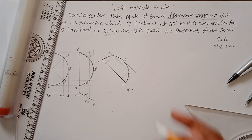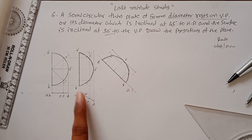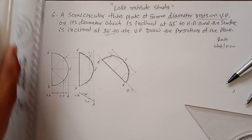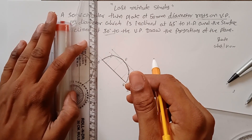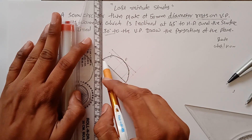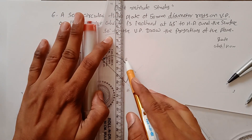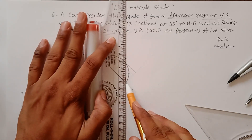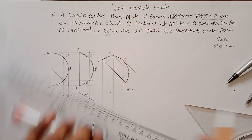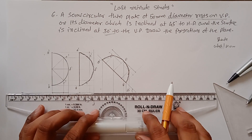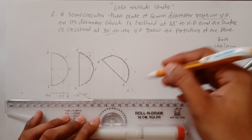Transfer the shape at 45 degrees — this is the initial position. Now find the intermediate position. To construct the final position, draw projection lines from all corners, using both the initial and intermediate positions. Points A and B are already on the XY line.